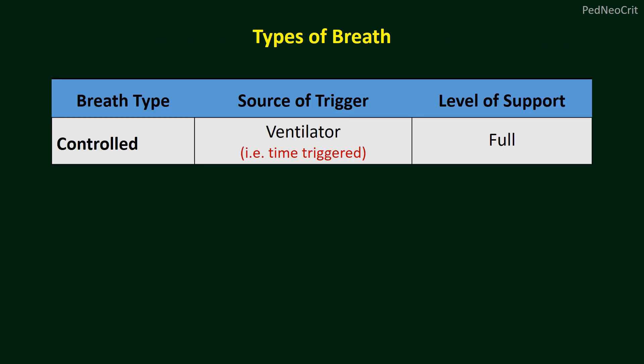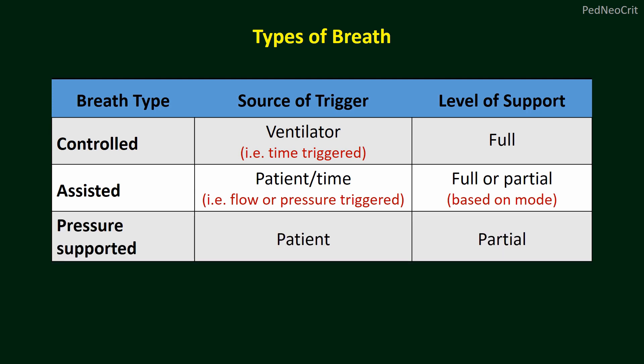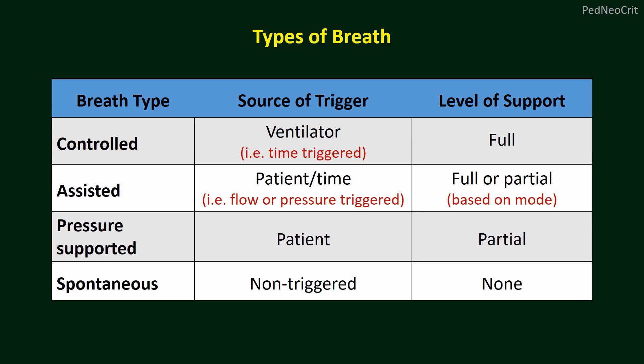Let us recapitulate a few slides from previous lectures. There are different types of breath in ventilation. First, controlled breath — provided by the ventilator, time-triggered or machine-triggered, with full support. In assisted breath, it is patient-triggered or time-triggered, and full or partial support is provided as per mode of choice. In pressure-supported breath, all breaths are patient-triggered and only partial support is provided. In spontaneous mode, there is an option to add pressure support — if added, that becomes pressure support mode, which is synonymous with spontaneous.